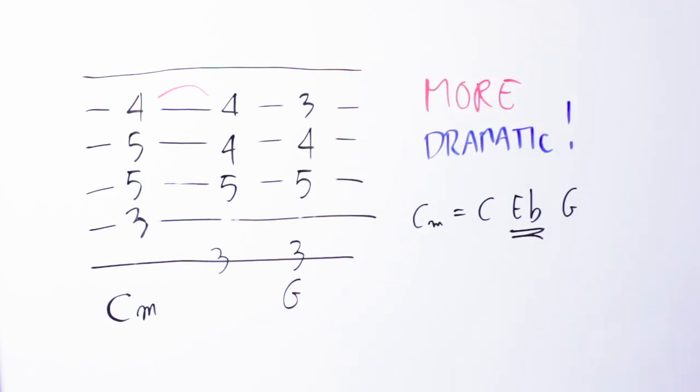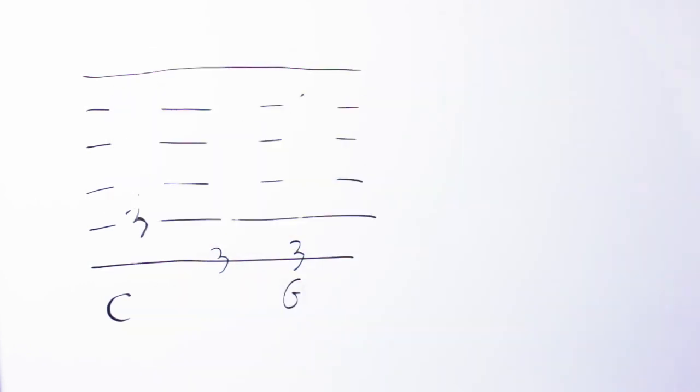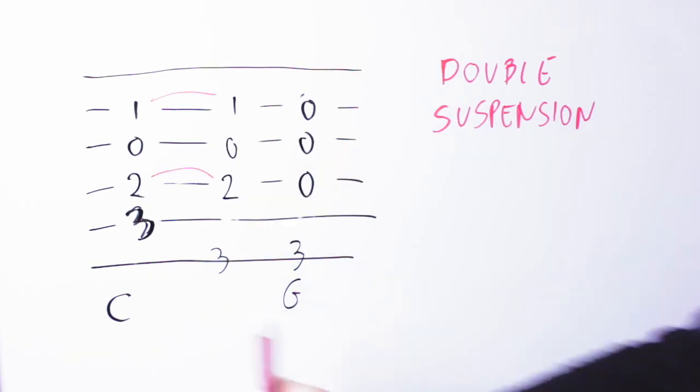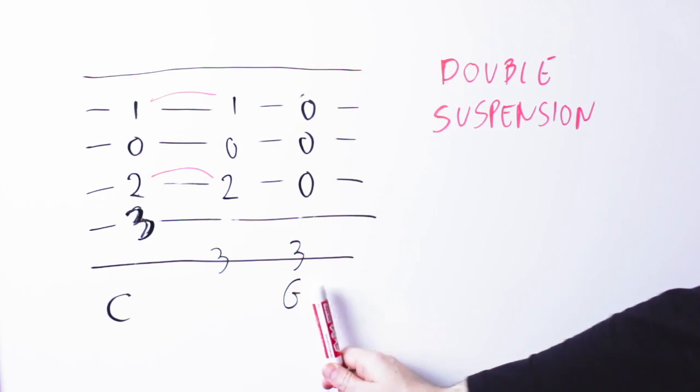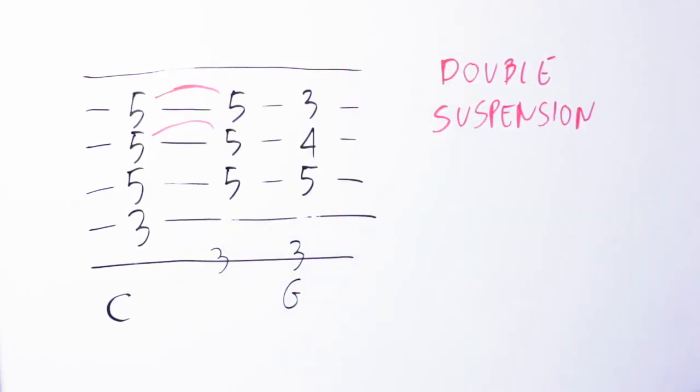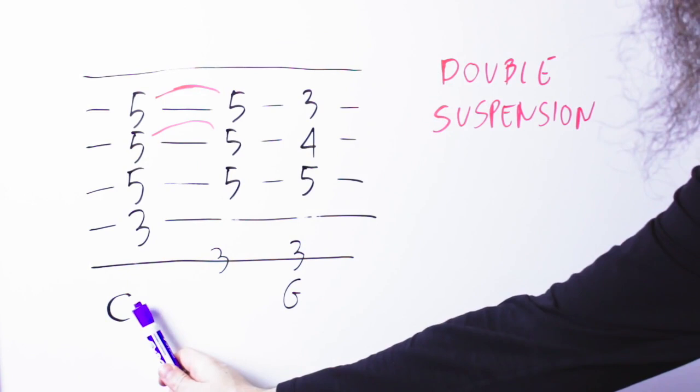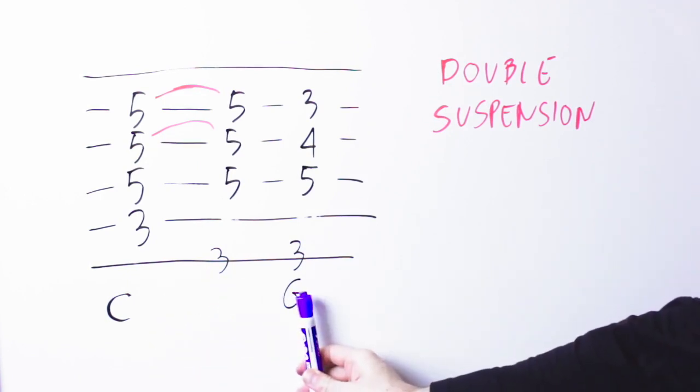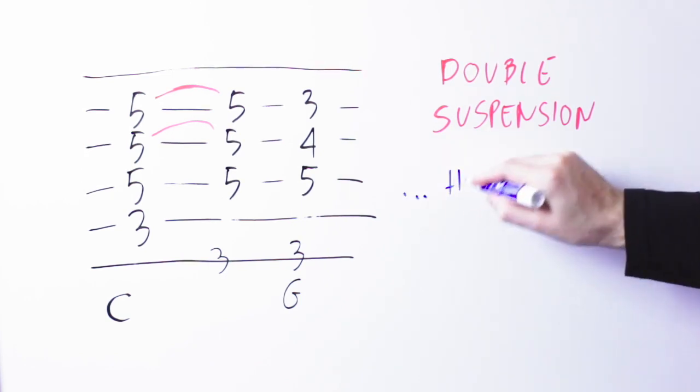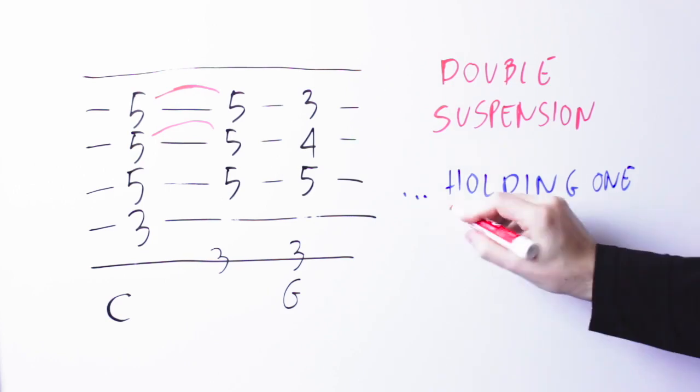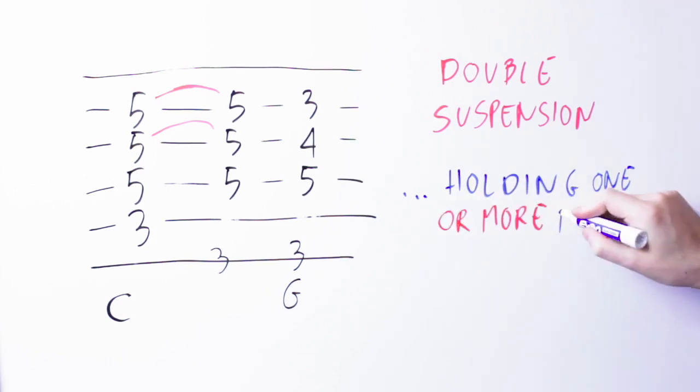Now, the fun thing is that I can suspend both notes at the same time. I'm going to do this in two different voicings. The first one with the C suspension on top. And the second one with the E suspension on top. And again, all those sounds are just plain old C to G. I'm just holding a note of the C chord into the G chord, and then later moving this note down a step in the scale into a note of the G major chord.